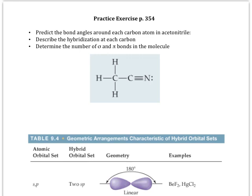This is a practice exercise from page 354 in the textbook. We're going to look at a larger molecule, acetonitrile. We're going to try to determine the bond angles around each carbon atom, talk about their hybridization, and then count the number of sigma and pi bonds.